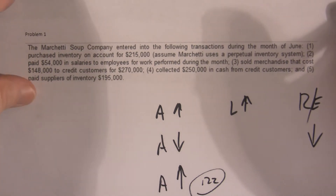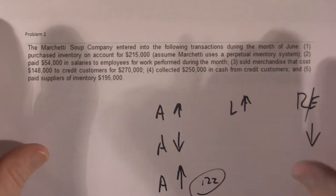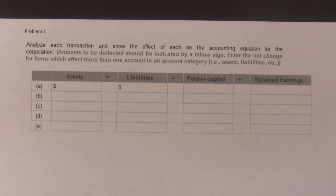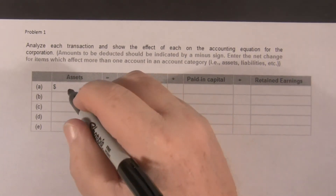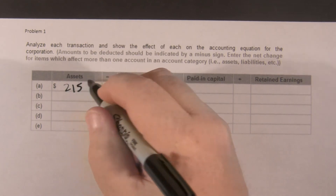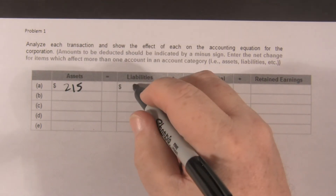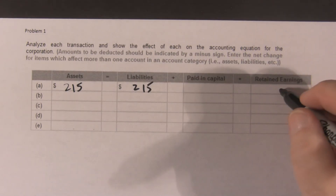So if we fill in the little chart that they ask us to fill in, we use the $215,000 for the purchase of inventory. Assets go up by $215,000, liabilities go up by $215,000 — no change to retained earnings or equity.